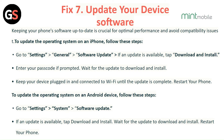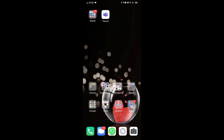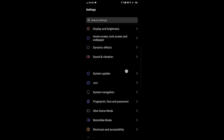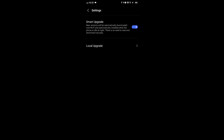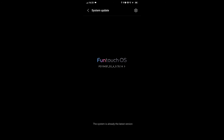Fix 7: Update your device software. Keeping your phone software up to date is crucial for optimal performance and avoiding compatibility issues. For iPhone: go to Settings, then General, then Software Update. If an update is available, tap Download and Install, enter your passcode if prompted, wait for the update to install, then restart your phone. For Android: go to Settings, then System, then Software Update. If an update is available, tap Download and Install, wait for the update to install, then restart your phone.